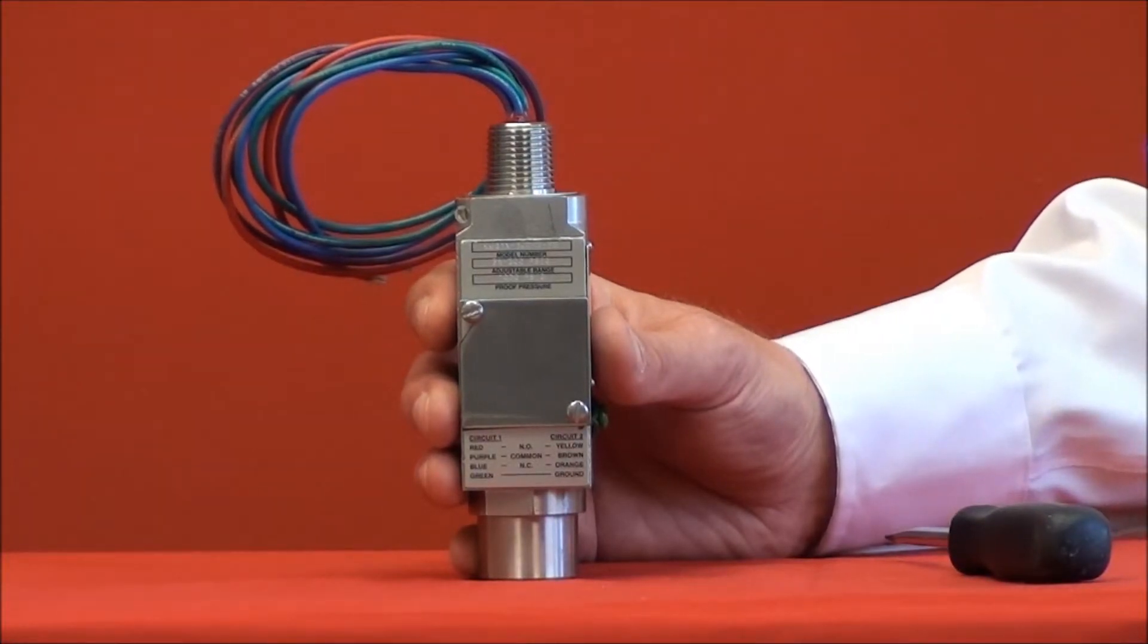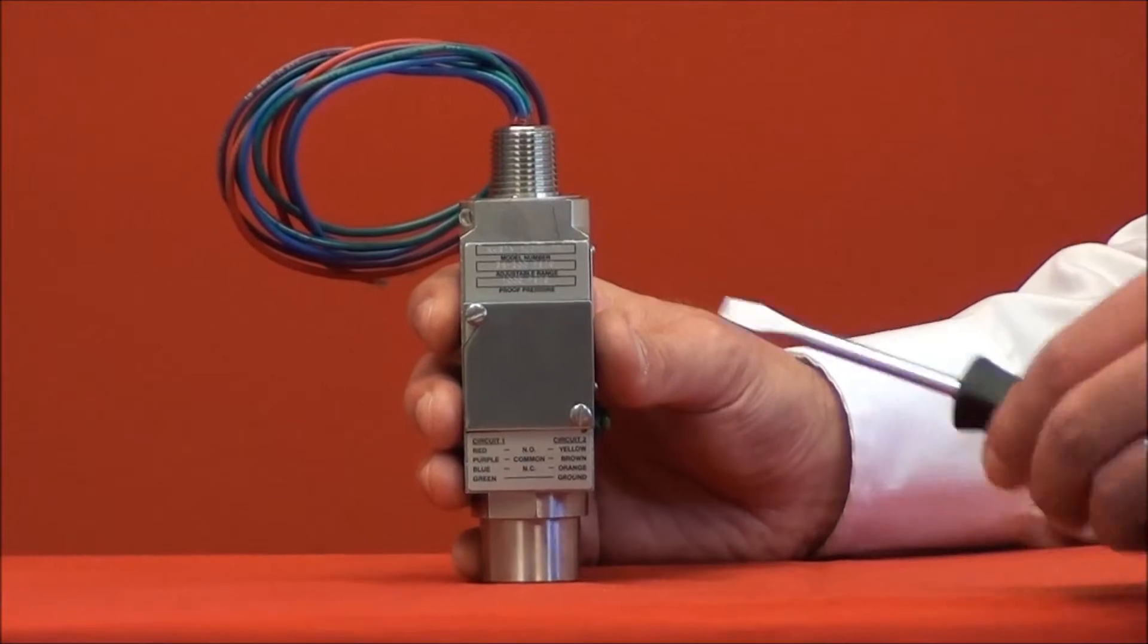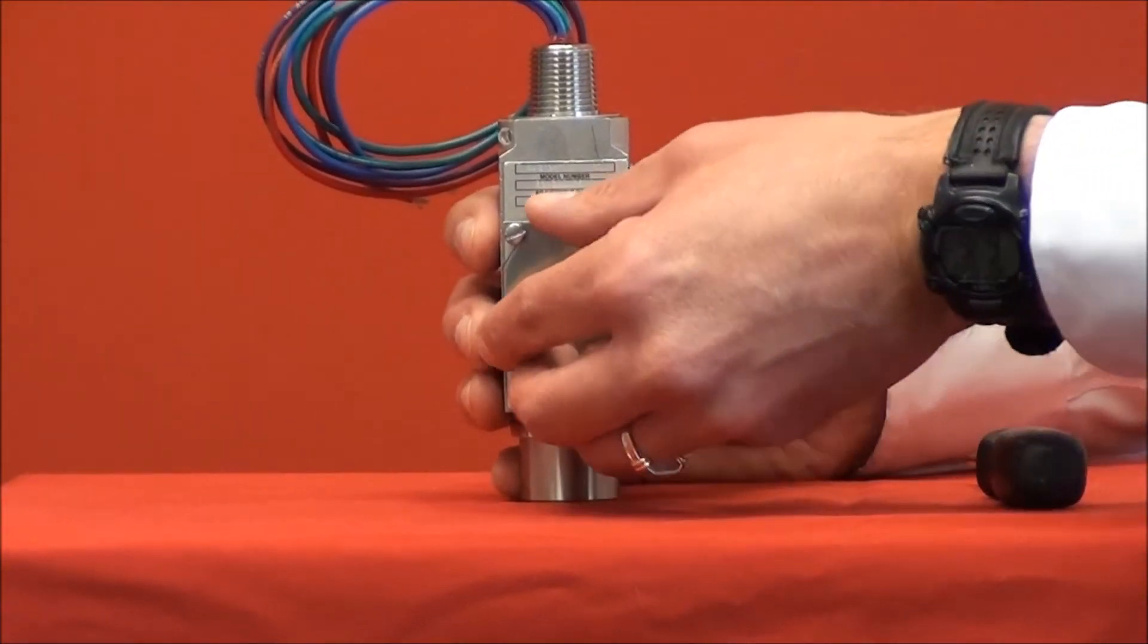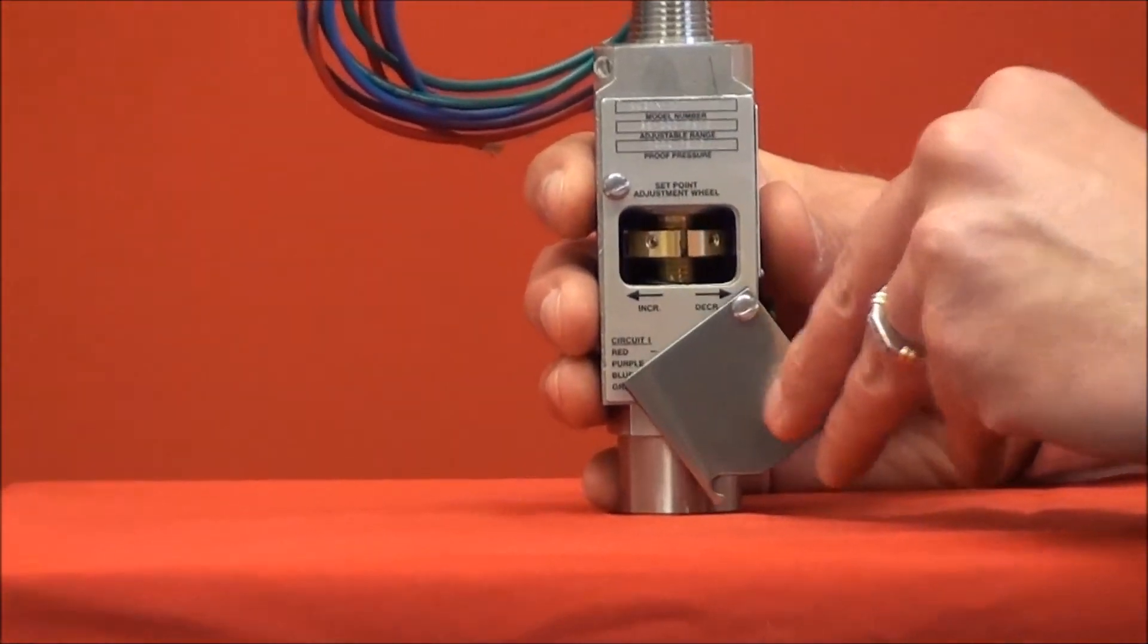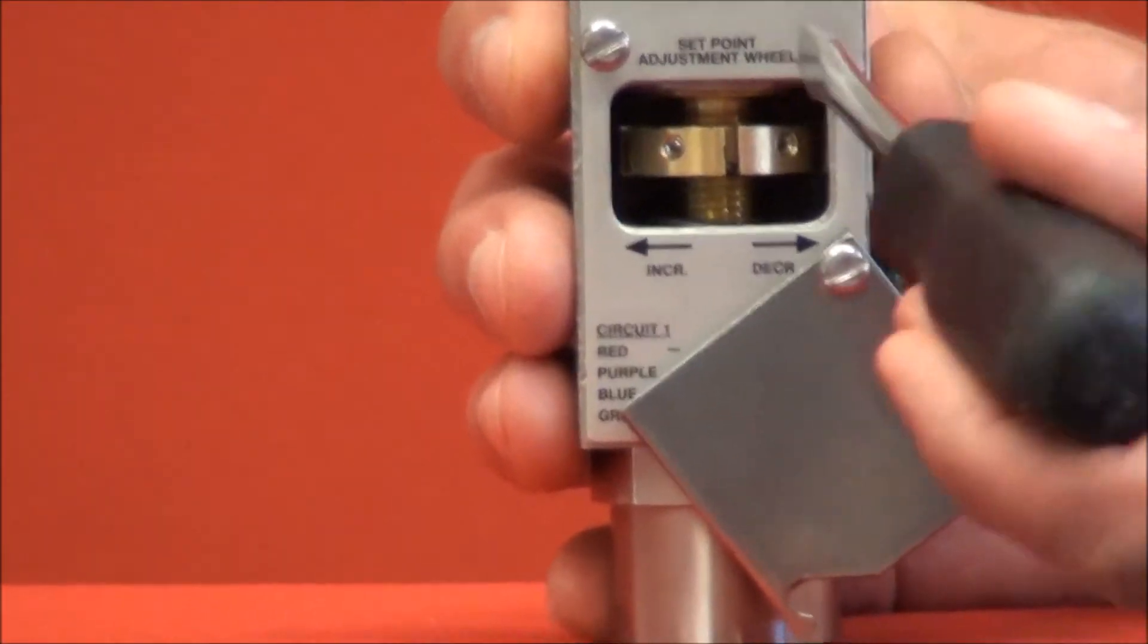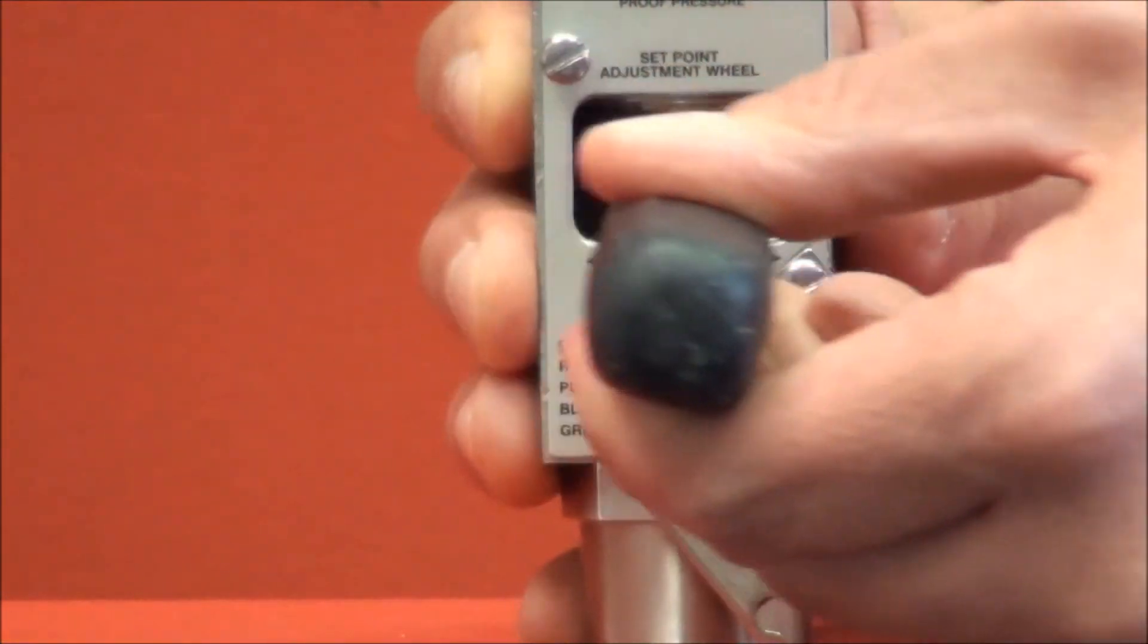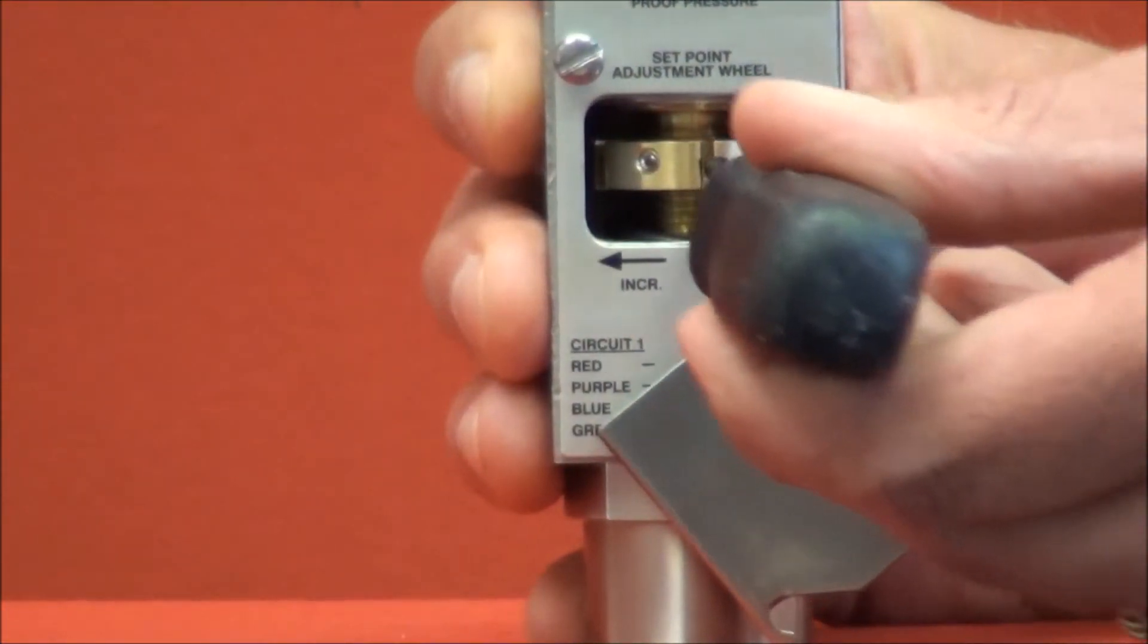The set point adjustment is quite easy. It requires only a flat head screwdriver. Once the cover is open, simply insert the screwdriver into the wheel and rotate left or right until the required pressure set point is obtained.